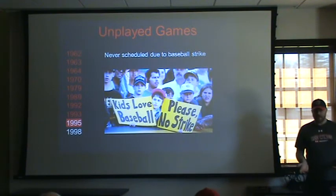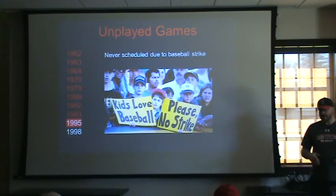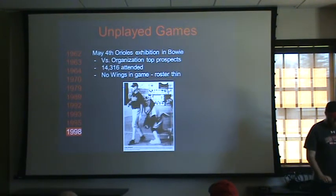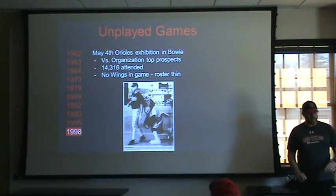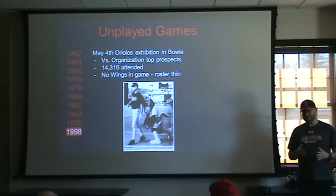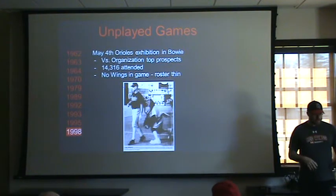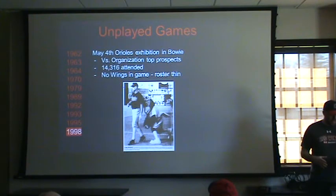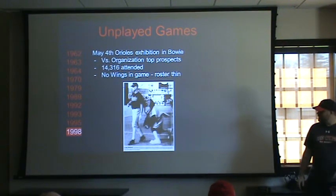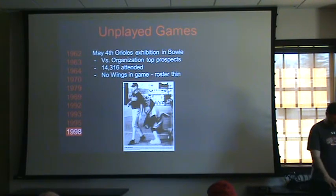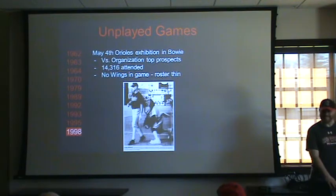1995 was cancelled with the baseball strike — the season started two weeks late and they shortened the Major League season, leaving no room for exhibition games. In 1998, the Orioles played an exhibition game in Bowie instead of Rochester, just another factor that led to the breakup of the Wings-Orioles relationship. The exhibition in Bowie was against organizational top prospects, not the Baysox. They didn't have any Red Wings in the game because they had players on the disabled list, leaving the roster at only about 21. I think Cal Ripken probably would have been happier coming to Rochester so he wouldn't have had the extra scrutiny.